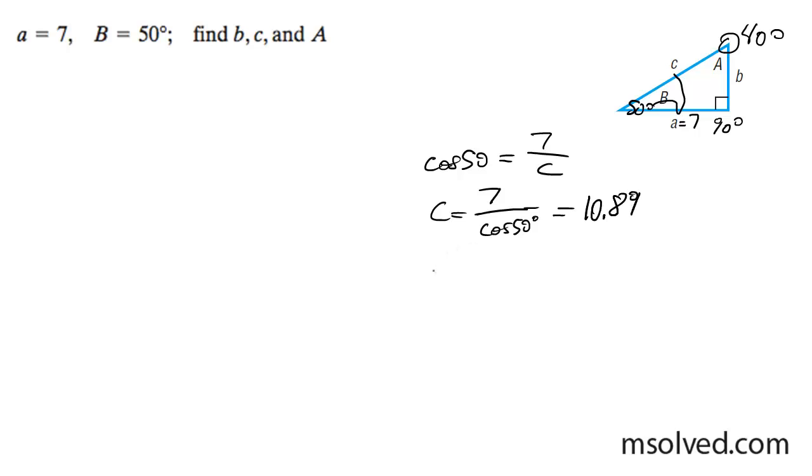And then for side B, it's going to be sine of 50 degrees equals B divided by 10.89, and then finally 10.89 times sine of 50 is finally going to be equal to 8.34.